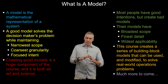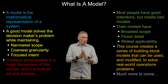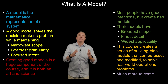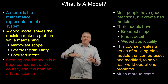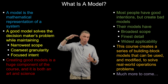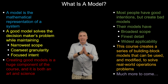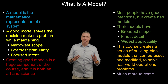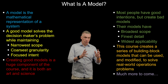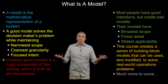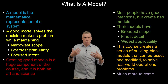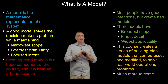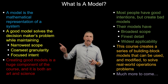A good model has three attributes: first, the narrowest scope — where the model begins and ends is as small as possible; second, the coarsest granularity — as high a level as we are willing to tolerate; and third, the most focused intent — focused on exactly what the decision maker wants to solve. Those three ingredients are critical to creating a good model, and this course is really about model building.